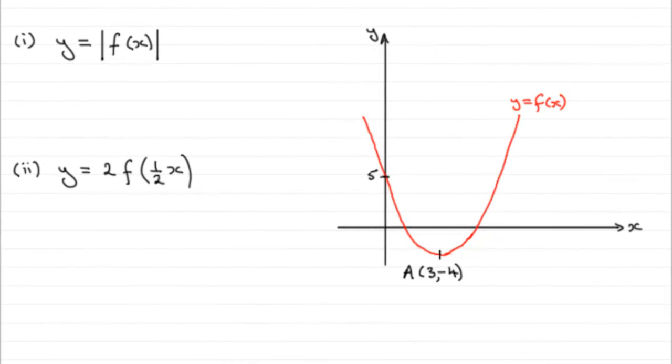Okay, so for this first part then, we've got the graph of y equals f of x with its minimum point here, A at (3, -4), crossing the y-axis at 5, and we've got to find out then where A moves to, where it transforms to, under these particular transformations.